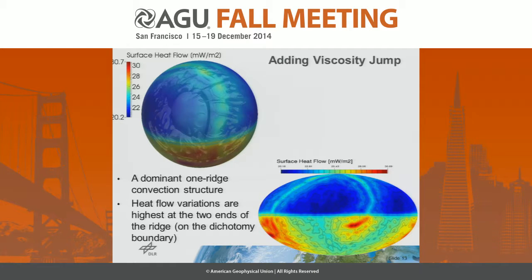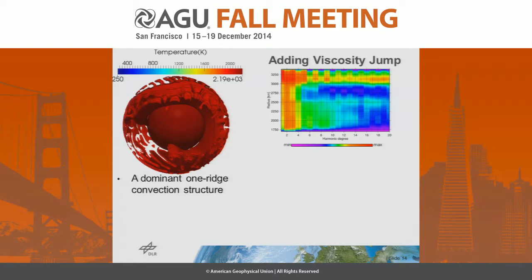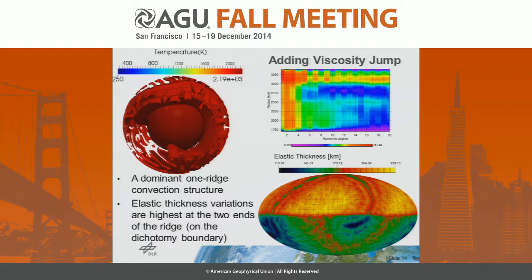In the surface heat flow map we recognize the ridge structure in the mantle, with high heat flow variations at the two ends of the ridge. Looking at the surface heat flow averages — for the entire surface, southern hemisphere, and northern hemisphere — we see that in this case the value is about 1.5 milliwatts per square meter above the southern hemisphere average. The spherical harmonics analysis again gives a low-degree structure, visible also in the elastic thickness, with the highest value being about 236 kilometers — still considerably lower than the 300-kilometer estimate.